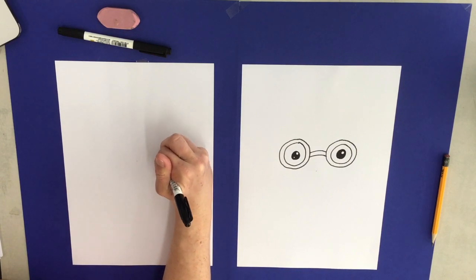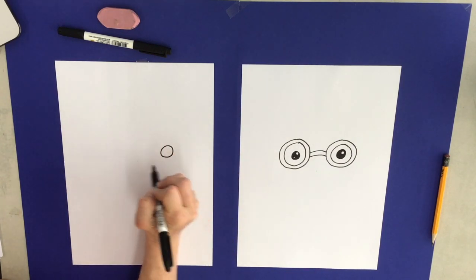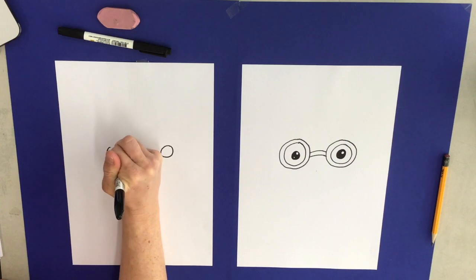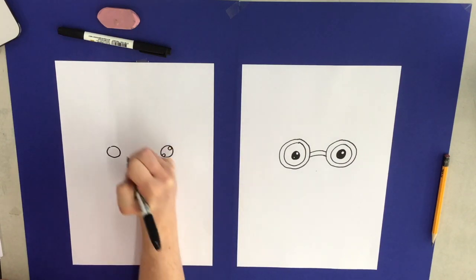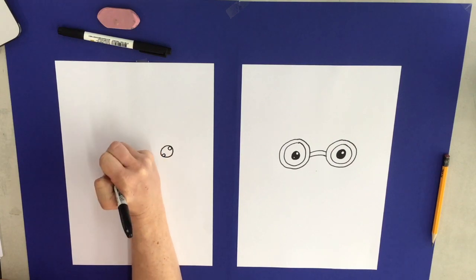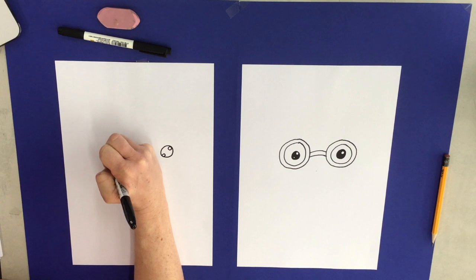So now I am going to start drawing the male scientist's eyes. This time I am going to be drawing both of the eyes at the same time. Again I am putting those tiny white circles in the eye. And that is where the reflection is. So we are drawing shapes inside of shapes.